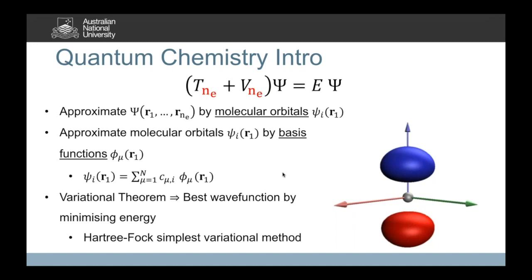Starting at the very beginning, where all good things start: the time-independent Schrödinger equation. We have our Hamiltonian, broken up into a kinetic energy operator and a potential energy operator, which operates onto the wave function to return the electronic energy as an eigenvalue. The unknown is our electronic wave function. The standard approach is to approximate this wave function by a combination of molecular orbitals, then approximate these molecular orbitals by a linear combination of basis functions — the linear combination of atomic orbitals approximation.